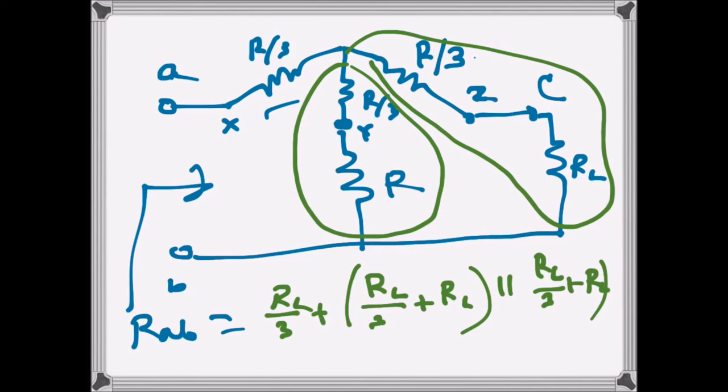And as a result, what happens, since these two are the same resistances, these two are the same, so the parallel combination will be half of that. So R_ab will be, R_ab will be here we have R_L over 3.